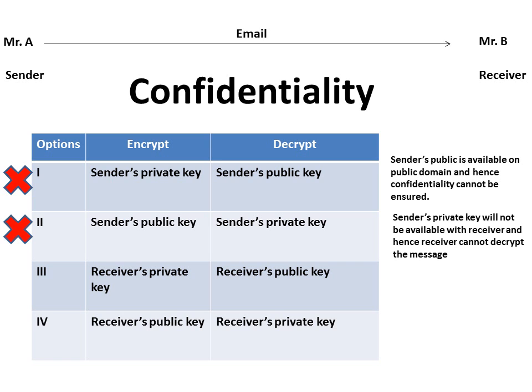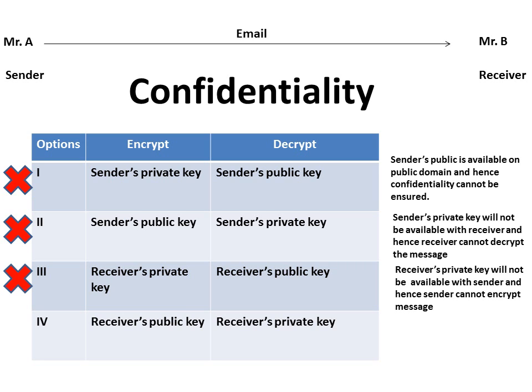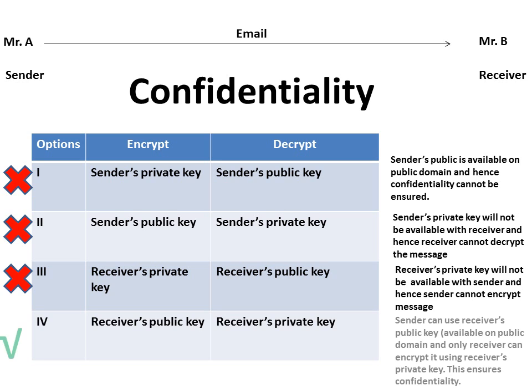Sender's public key can be decrypted only by using the sender's private key, but the sender's private key will not be available with the receiver, and hence the receiver cannot decrypt the message. Receiver's private key will not be available with the sender, and hence the sender cannot encrypt the message. To ensure confidentiality, the message needs to be encrypted using the receiver's public key. The sender can use the receiver's public key that is available in the public domain, and only the receiver can decrypt it using the receiver's private key. This will ensure confidentiality.